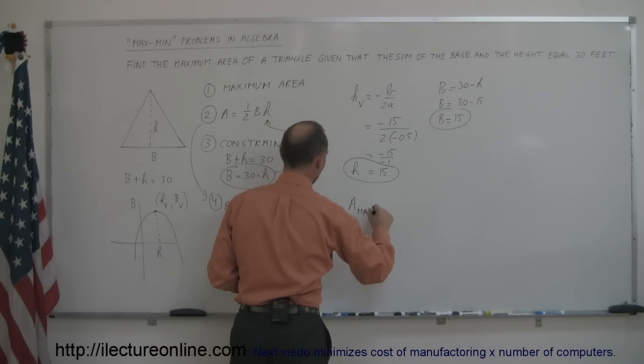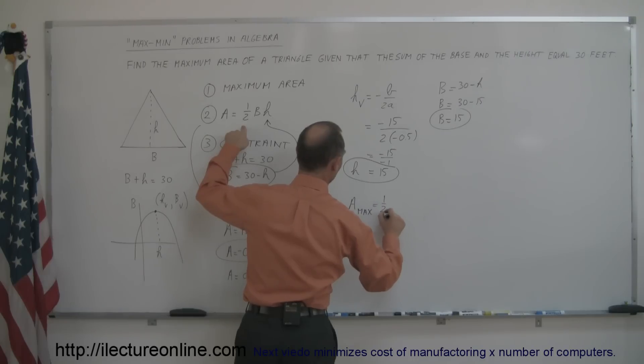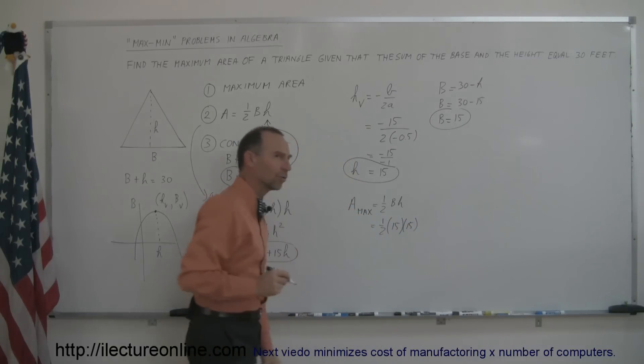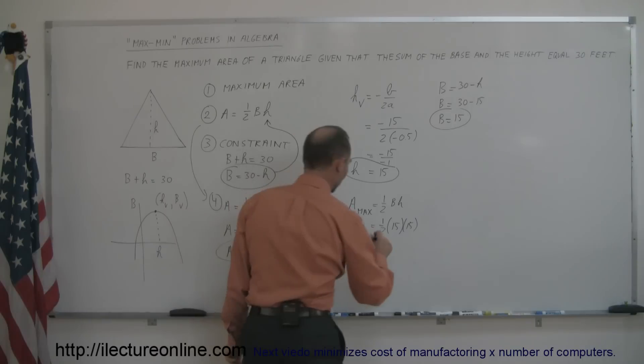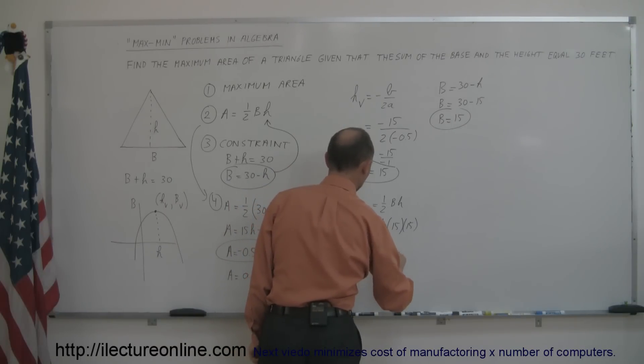And that gives us the maximum area, A max, which is equal to one half the base times the height, so that's equal to one half times the base of 15, and the height of 15. Now 15 times 15 is 225 times one half, that would be 112.5 square feet.